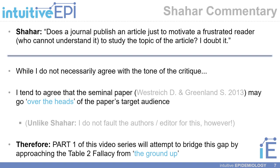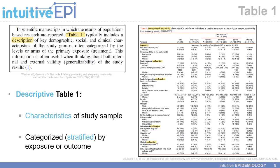Unlike Shahar, I do not fault the authors or the editor of the American Journal of Epidemiology for this. However, Part 1 of this video series will attempt to bridge this gap by approaching the Table 2 Fallacy concept from the ground up, starting at the basics of explanation or explanatory research in epidemiology. Before we talk about the Table 2 Fallacy, it may be useful to start by describing what a Table 1 is typically in a paper.